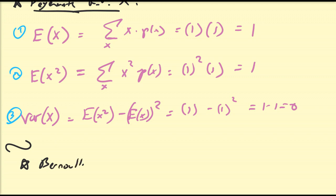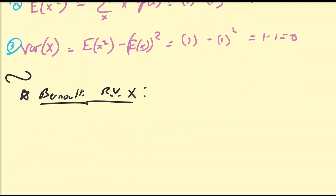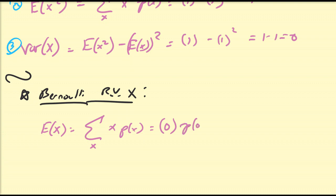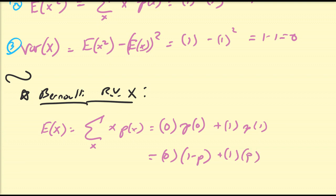Now let's do the same for a Bernoulli random variable X. The expectation of X, by definition, is the sum over all x of x times p(x). Bernoulli has two events: 0 and 1. So we have 0 times p(0) plus 1 times p(1). Recall p(0) is 1 minus p and p(1) is p. Zero times anything is zero, and 1 times p is p. So the expectation of a Bernoulli random variable equals p, the probability of success.